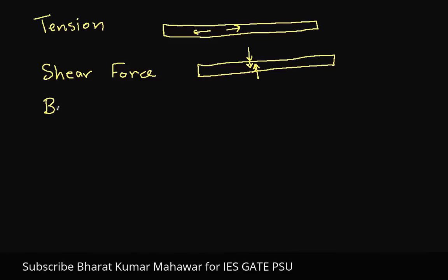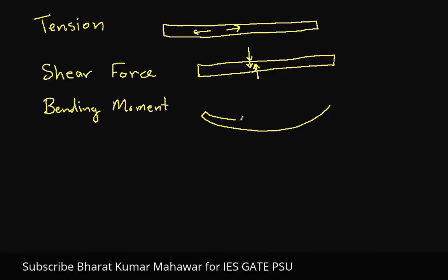Now bending moments — these are moments that cause bending. So if I have a beam that should be straight and ends up looking curved, because maybe I've dropped a very large box on it, that box is applying a moment which causes the beam to bend, causing this end on the right to curl up and this end on the left to curl up.